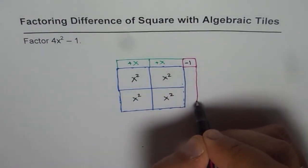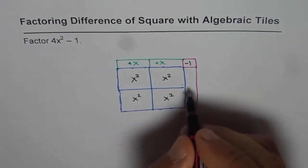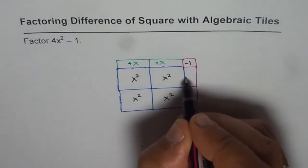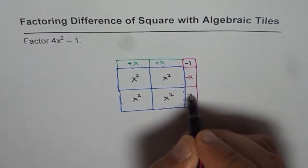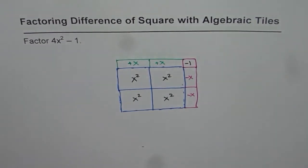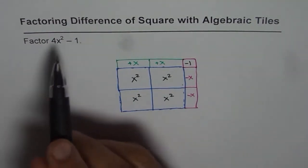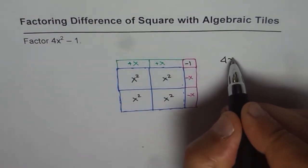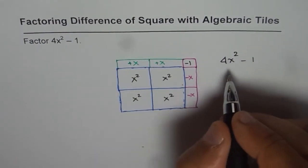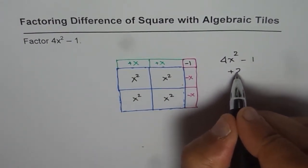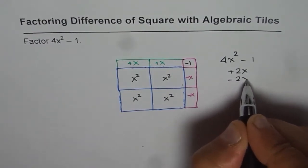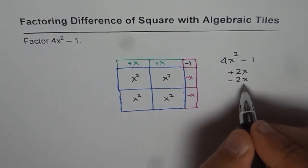Adding and subtracting keeps the equation in equilibrium. This is minus x. So what we did was we had 4x² minus 1. We added 2x tiles and subtracted 2x tiles. That is kind of zero, so the whole rectangle still represents 4x² minus 1.